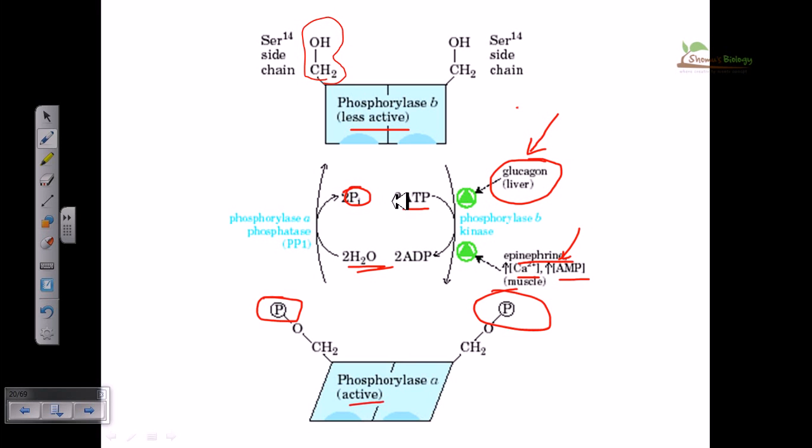This enzyme is covalently modified because of this phosphate addition, but this enzyme is also allosterically regulated due to the presence of glucagon, epinephrine, calcium concentration, AMP and all these things. In the liver it is activated by glucagon, but in muscle cells it is activated by epinephrine.